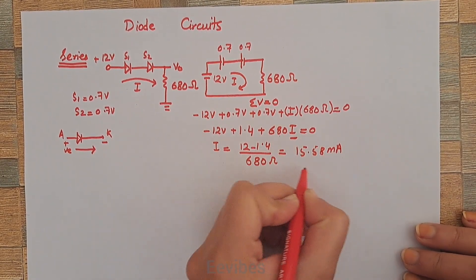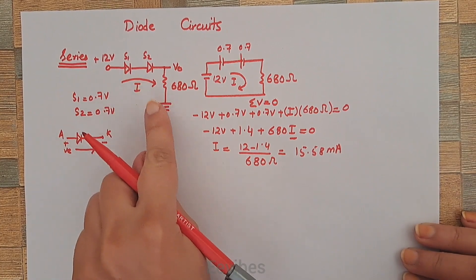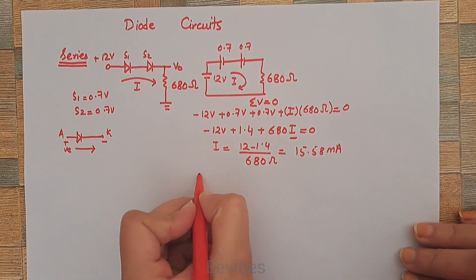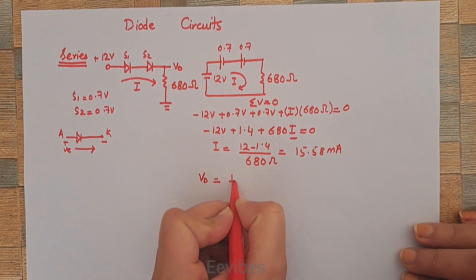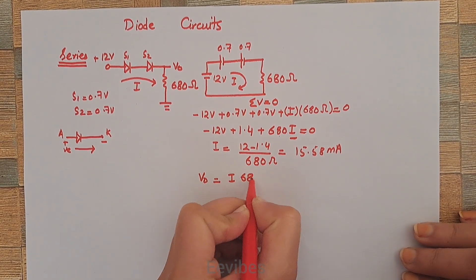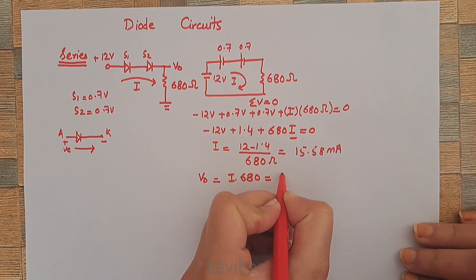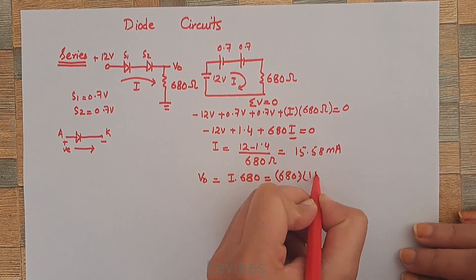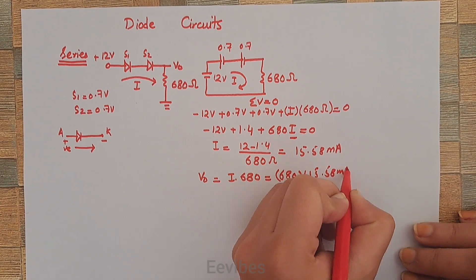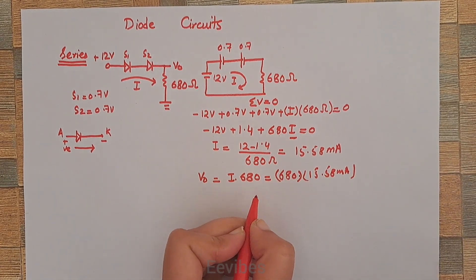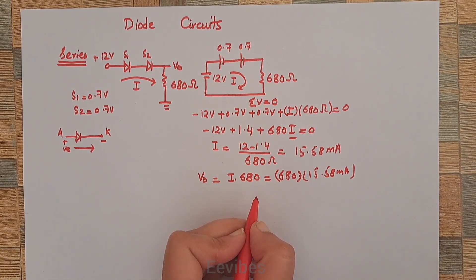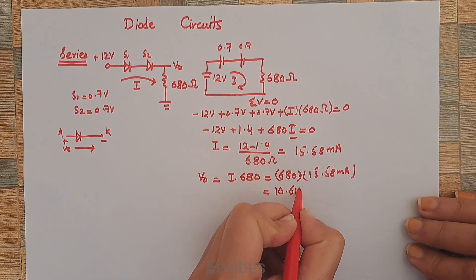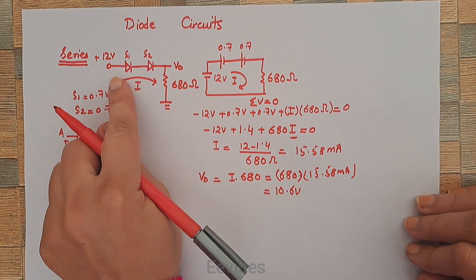Now the last step is to determine the output voltage, which equals I × 680Ω. So 680 will be multiplied with 15.58 milliamperes and you will get the answer, which is equal to 10.6 volts.